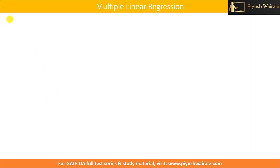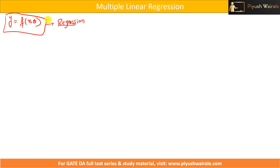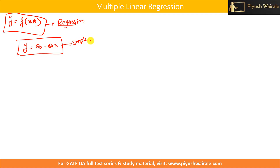In the previous lecture, I said that y equals to f of x comma theta is our generalized expression for regression. Depending upon the number of variables and theta, we can say which type of regression it is. When y equals to f of x comma theta, it basically means y equals to theta naught plus theta 1 x. This is for simple linear regression.